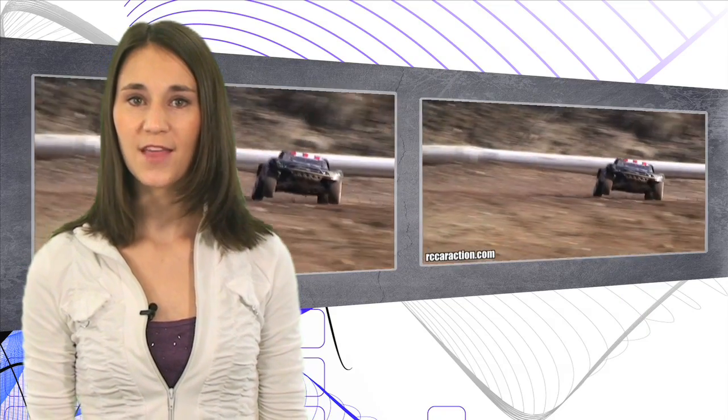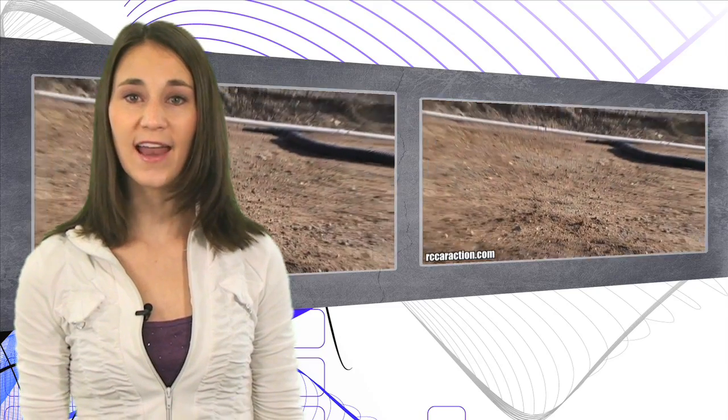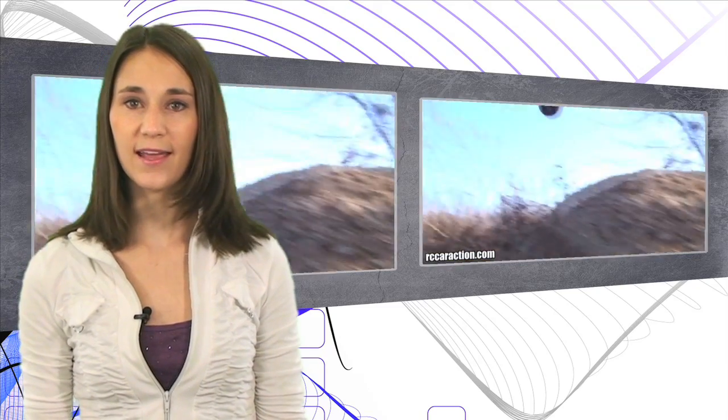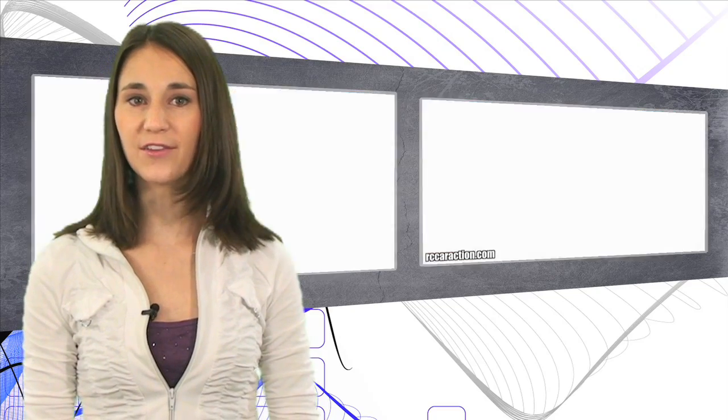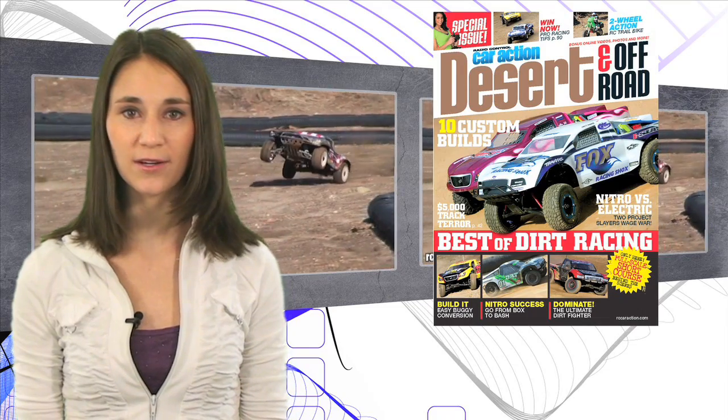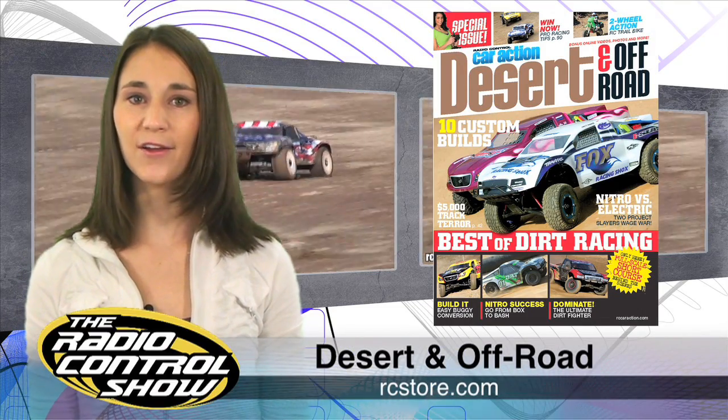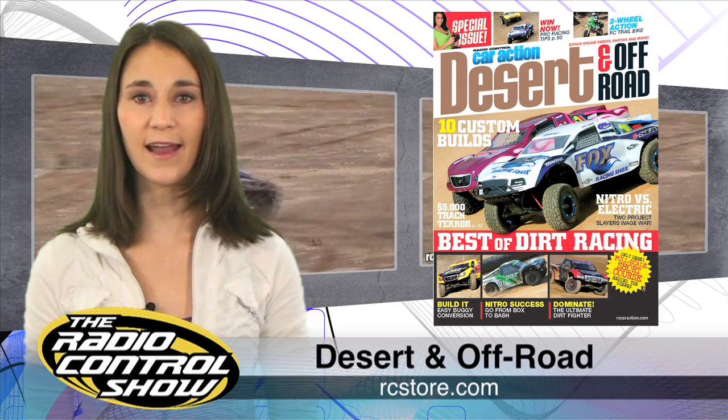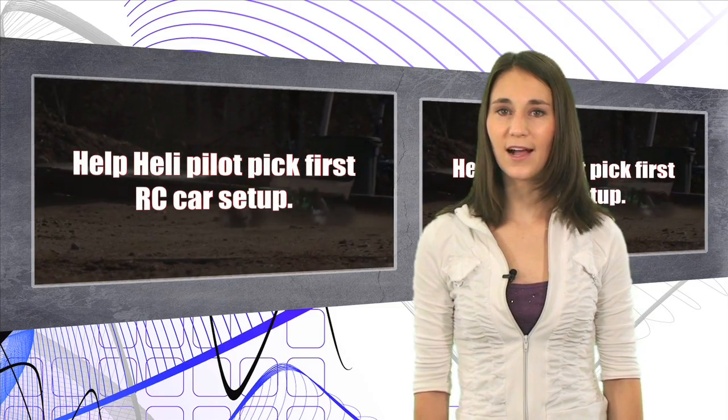One of the fastest growing trends in RC is scale off-road motorsports. This segment includes high-speed desert racers, fender bashing short course trucks, and everything in between. If you want to get in on the action, the editors of RC Car Action magazine have you covered with the new desert and off-road special issue. It's loaded with awesome projects, helpful how-to articles, and all the latest off-road vehicles and gear. It's on sale now. Get your copy at hobby stores, newsstands, bookstores, or online at rcstore.com.